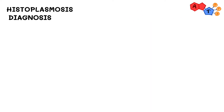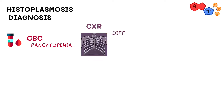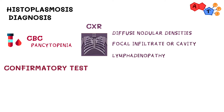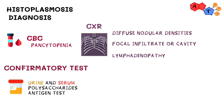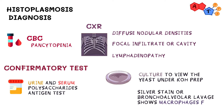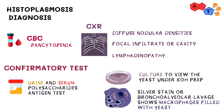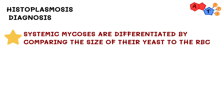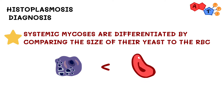For diagnosis, a CBC of an infected patient can show pancytopenia, and the chest X-ray will show diffuse nodular densities, focal infiltrate or cavity, or lymphadenopathy. The best confirmatory tests are urine and serum polysaccharide antigen test, culturing, or viewing the yeast form under potassium hydroxide prep — which usually takes time — silver stain, or bronchoalveolar lavage, which shows macrophages filled with yeast. Systemic mycoses are differentiated by comparing yeast size to RBCs; histoplasmosis hides inside macrophages and is smaller than RBCs.